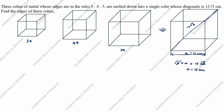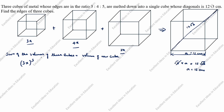We need to find the edges of the three cubes. The sum of the volumes of the three cubes equals the volume of the new cube. So 3x whole cube plus 4x whole cube plus 5x whole cube equals the volume of the new cube, which is 12 cube.